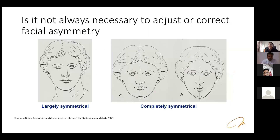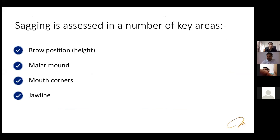Regarding facial symmetry: it is not always necessary to correct it. A completely symmetrical face can appear artificial, while slight asymmetry gives a more natural appearance. We do not aim to create perfectly symmetrical faces. Sagging is assessed in multiple areas: brow position, malar mound, mouth corners, and jawline.